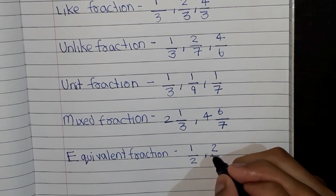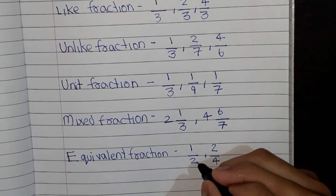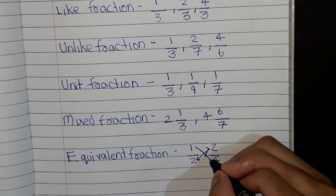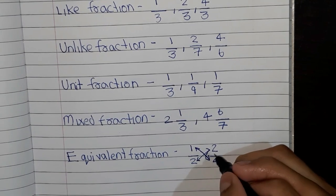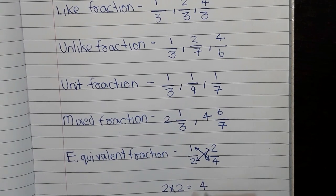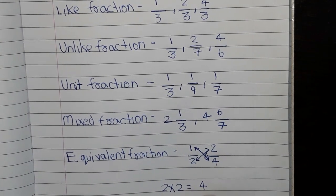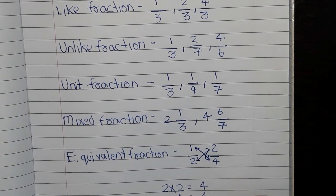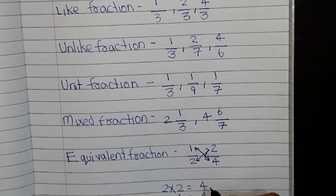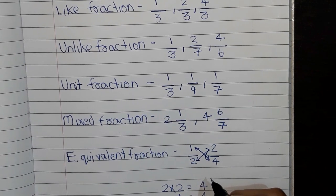So now we have to do cross multiplication. You have to multiply 2 with this and 1 with this. So 2 into 2 equals to 4, 1 into 4 equals to 4. So this shows us that this fraction is equivalent.